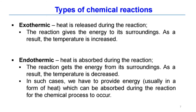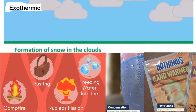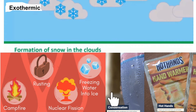There are two types of chemical reactions: exothermic and endothermic. For an exothermic reaction, heat is released to the surroundings, and we can see an increase in temperature of the substance. Examples include formation of snow in clouds, freezing water into ice, condensation, combustion, metal rusting, and the use of warmer packs.